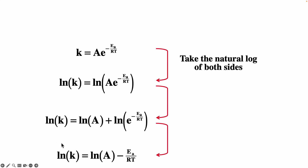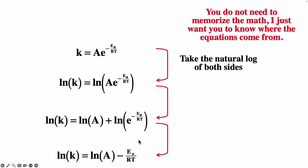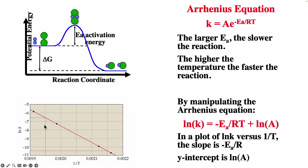The natural log of the rate constant equals natural log of A minus Ea over RT. If you plot the natural log of k as a function of 1/T, you'll get a straight line with a slope of minus Ea over R. This is ln(k) plotted as a function of 1/T — you get a straight line with slope of −Ea/R. This is one way we can actually determine the activation energy for a reaction.